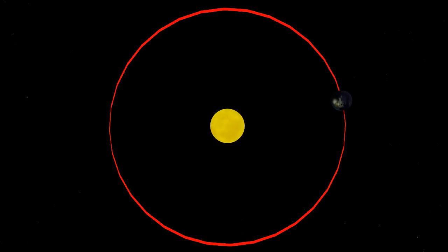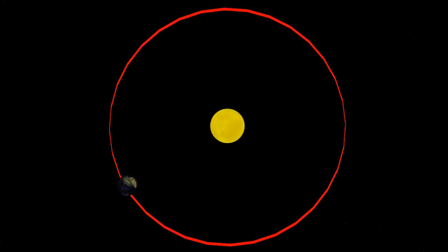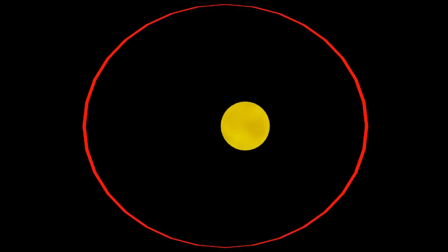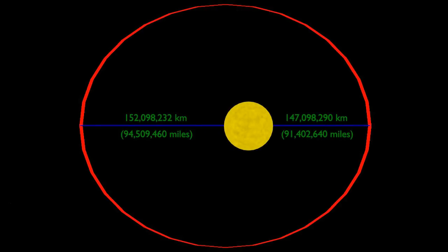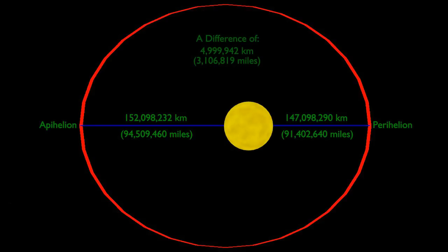Although we may think of the Earth as having a circular orbit, its orbit is actually slightly eccentric, meaning that the distance of the Sun changes throughout an orbit, with the difference between the minimum perihelion and the maximum aphelion being almost 5 million kilometres.